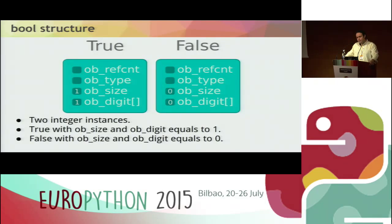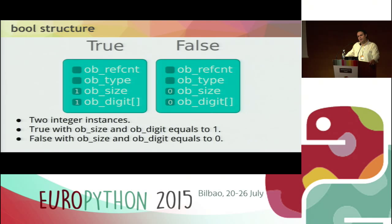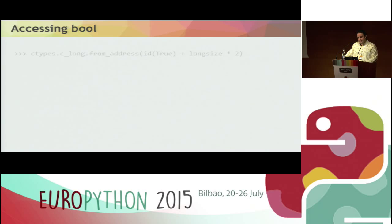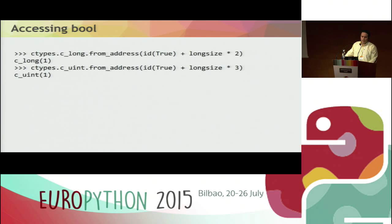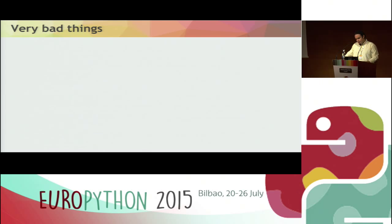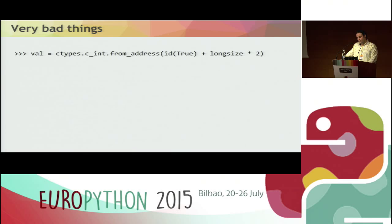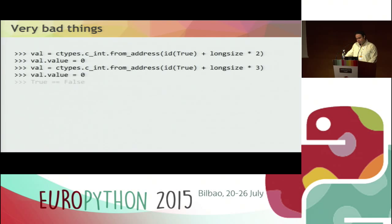The bool object is an integer. The True value is an integer with ob_size 1 and ob_digit 1. The False variable has ob_size 0 and ob_digit 0. They are singleton variables, like the None object, and ob_type points to the Boolean type. I can access ob_size and ob_digit of True and False — they're 1,1 and 0,0. If I get ob_size of True and set it to 0, and get ob_digit of True and set it to 0, now True is equal to False. True.